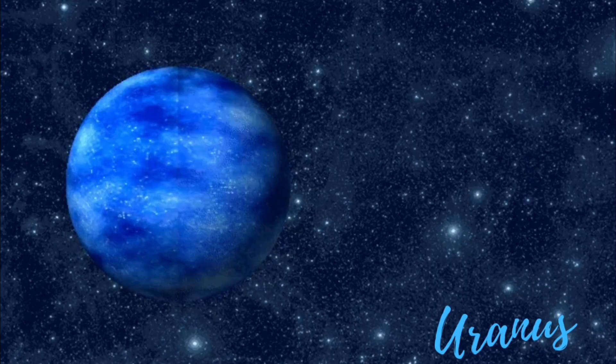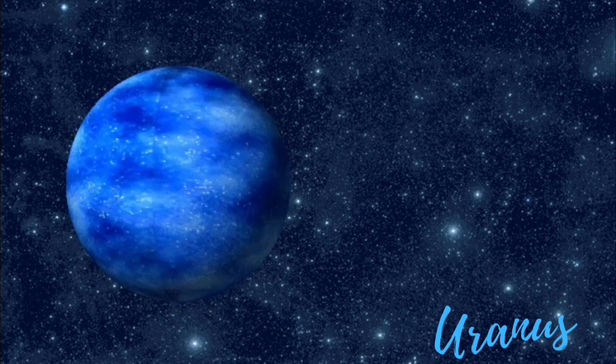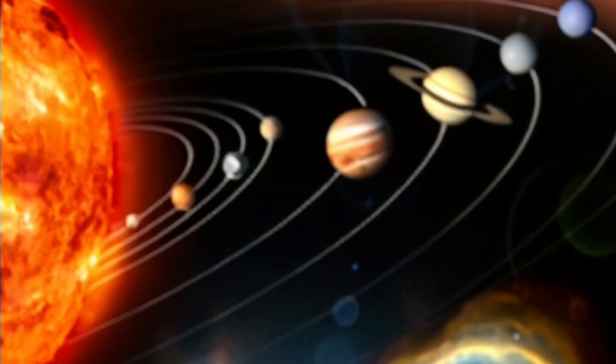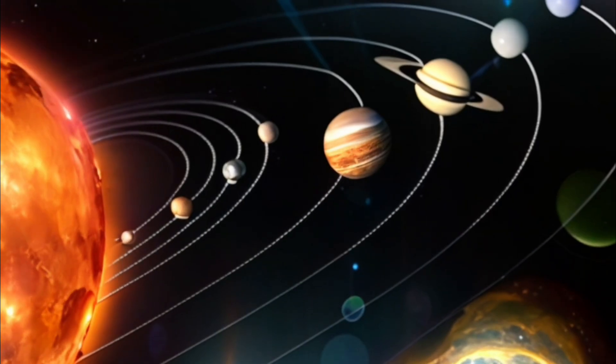Uranus is a bit tilted on its side, and it spins differently than most planets. It's a big chilly ball far from the Sun.